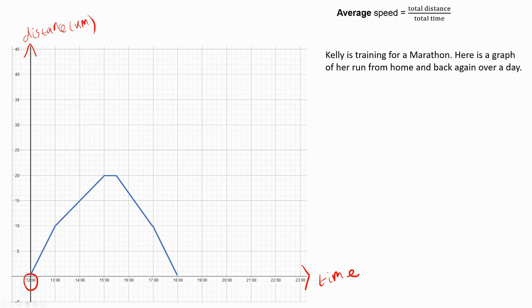To work out her average speed, we need to work out the total distance travelled divided by the total time taken. Looking at the graph, I can see she first travels 10 kilometres from 12 to 1, and then from 1 until 3 there's another 10 kilometres. That's a total of 20 kilometres on the way there, and then on the way back will be another 20 kilometres. So in total, she has run 40 kilometres.